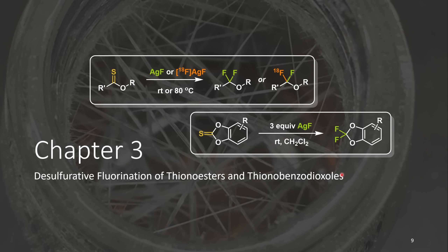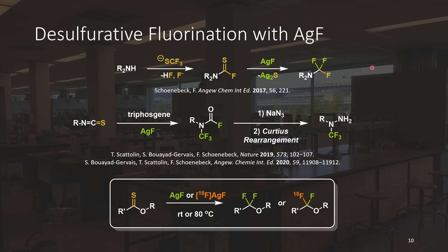As discussed in Chapter 2, difluoroethers are one type of fluorinated motif which may be examined during the development of new APIs, fluorinated materials, as well as PET radio tracers. Sulfur-containing compounds are known to undergo desulfurative fluorination under various conditions. The most precedented conditions tend to suffer from poor selectivity, often resulting in low yields, mixtures of products, or may require the use of hazardous reagents. A promising alternative to these is silver(I) fluoride.